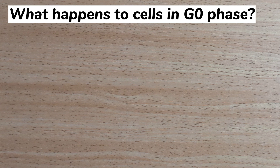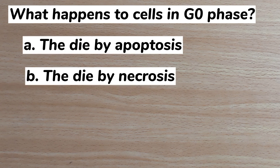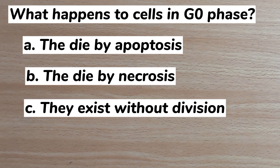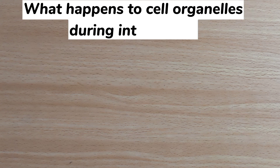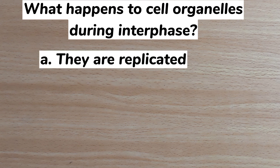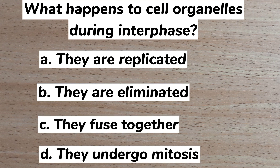Number nine: what happens to cells in G0 phase? A. They die by apoptosis, B. They die by necrosis, C. They exit the cell cycle and remain quiescent. Answer: C. They die by necrosis.